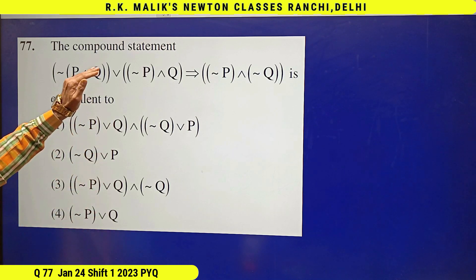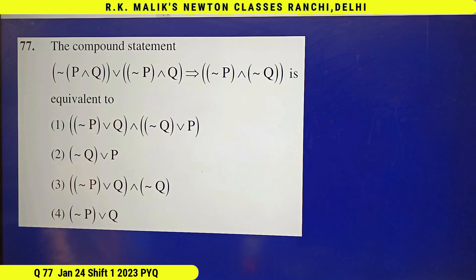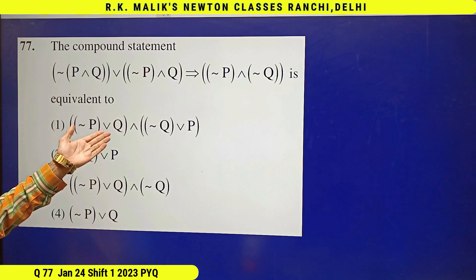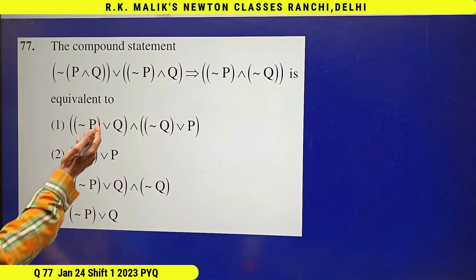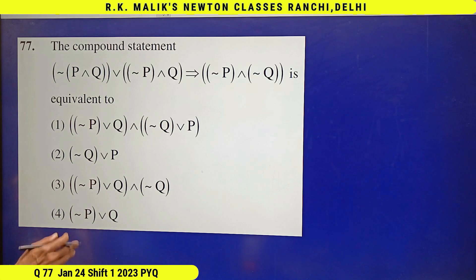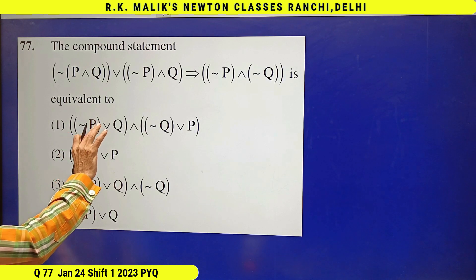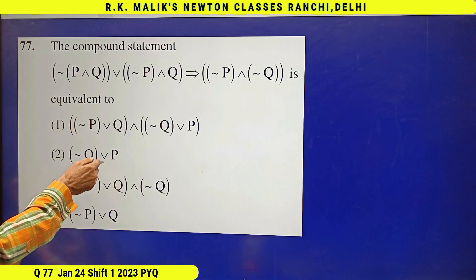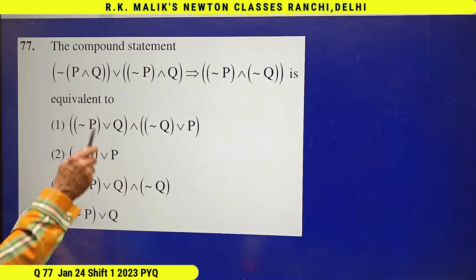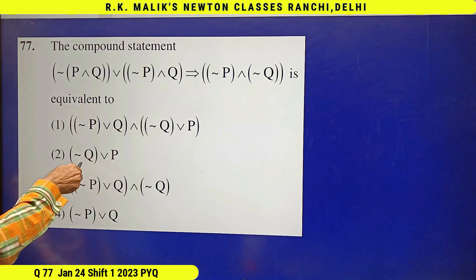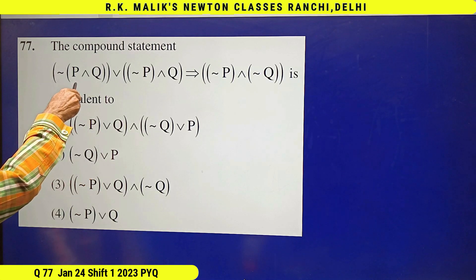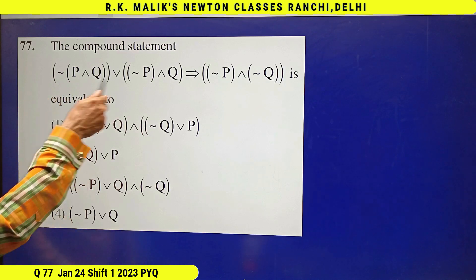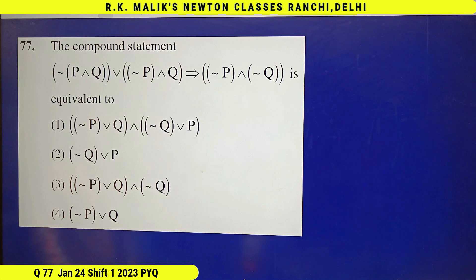The choice whose answer doesn't match is surely wrong. If only one choice matches, that is surely the correct choice. Whichever doesn't match is certain to be wrong. The choice whose answer matches can be correct. If more than one choice matches, then to select the correct one, take Q as tautology and P as it is, and again see which choice's answer matches.